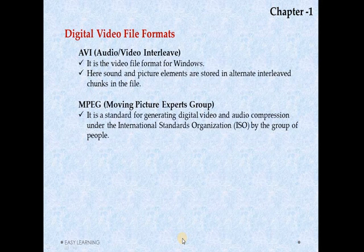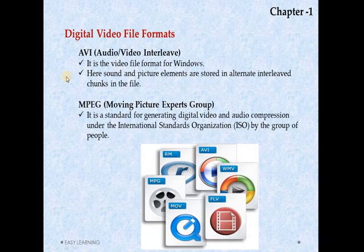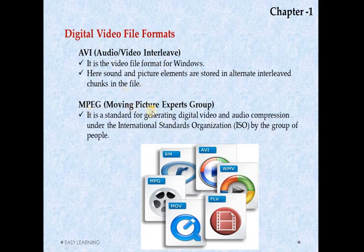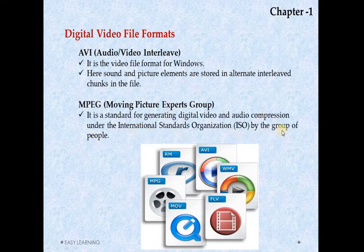Next are digital video file formats. AVI — Audio Video Interleave — is the video file format for Windows. The sound and picture elements are stored in alternate interleaved chunks in the file. MPEG — Moving Picture Experts Group — is a standard for generating digital video and audio compression under the International Standards Organization ISO, developed by a group of people. These are some of the other digital video file formats.